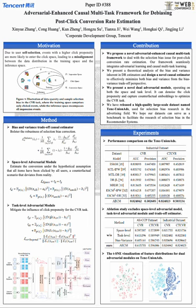In conclusion, the contributions of our work can be summarized as follows. Firstly, we propose a novel adversarial-enhanced causal multitask framework to deal with the selection bias issue for post-click conversion rate estimation. Our framework seamlessly integrates adversarial learning and causal multitask learning. Secondly, we present a theoretical analysis of the bias and variance inherent in DR estimators and design a novel causal estimator to effectively minimize both bias and variance from the bias-variance trade-off perspective.